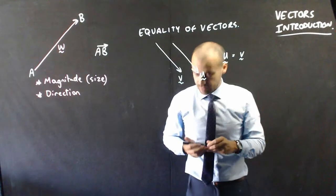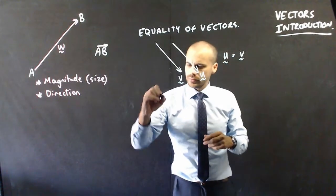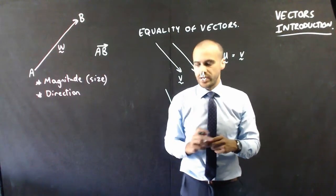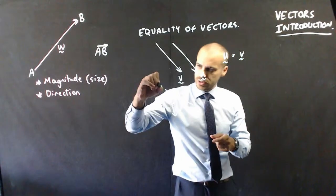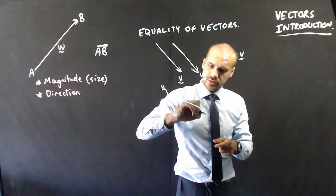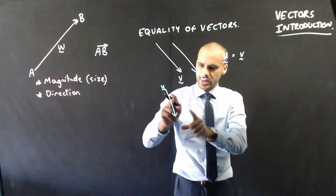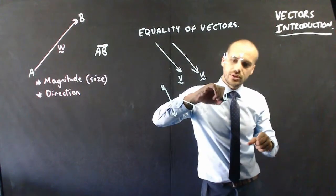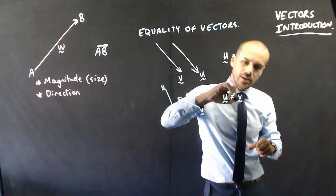However, here's another vector. This one's U and this one's V. They're the same length but they're moving in different directions. So U is not equal to V.